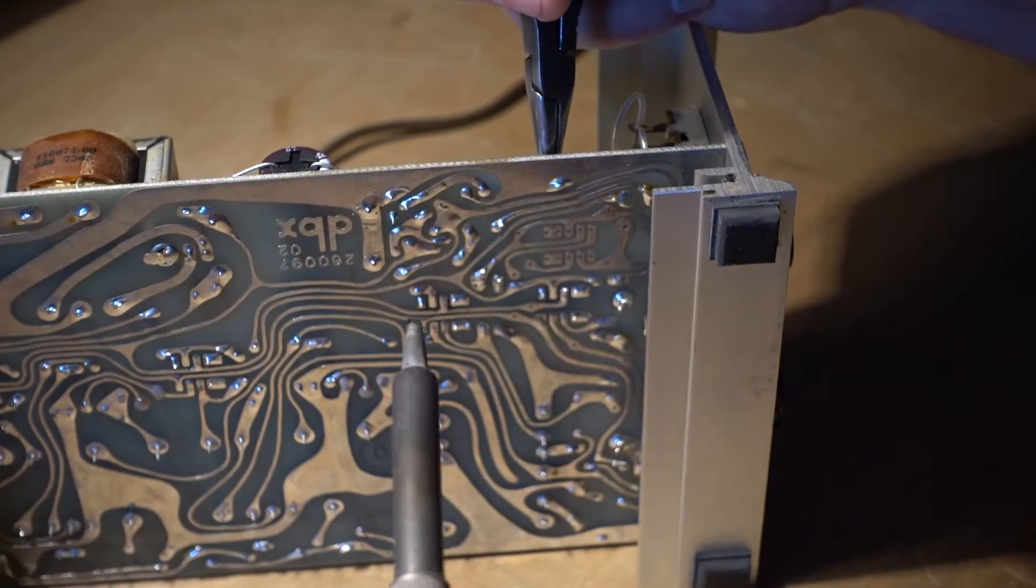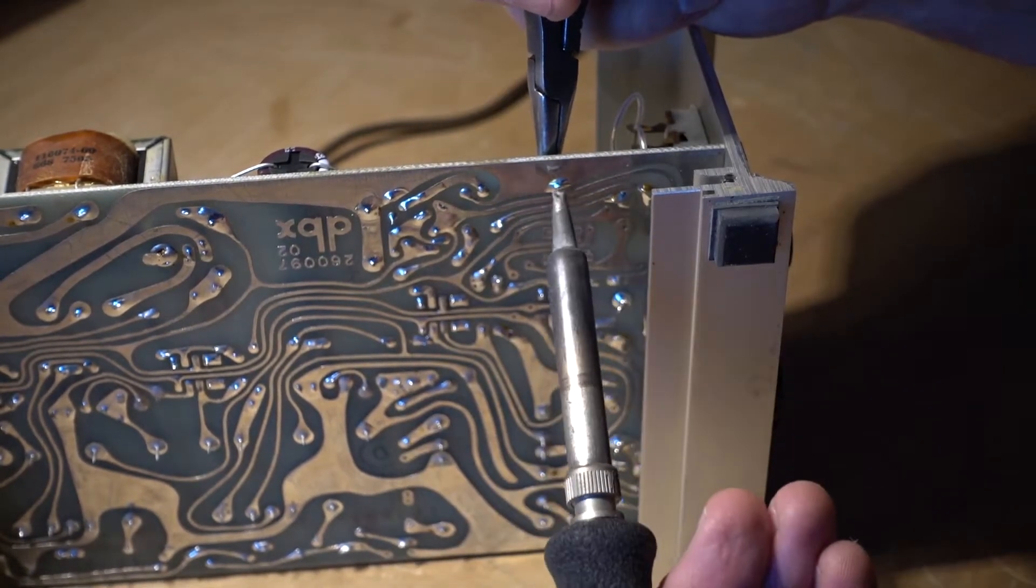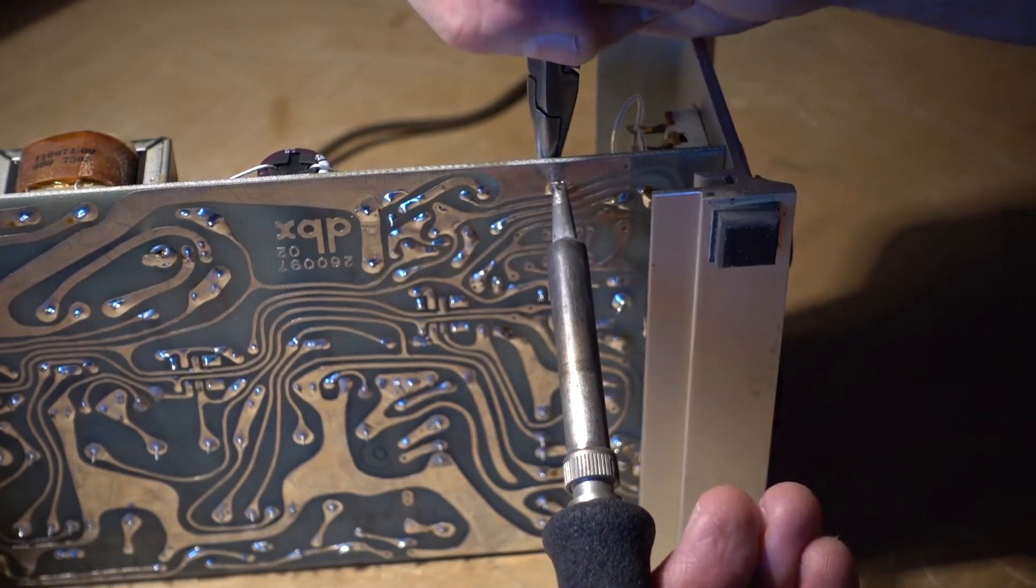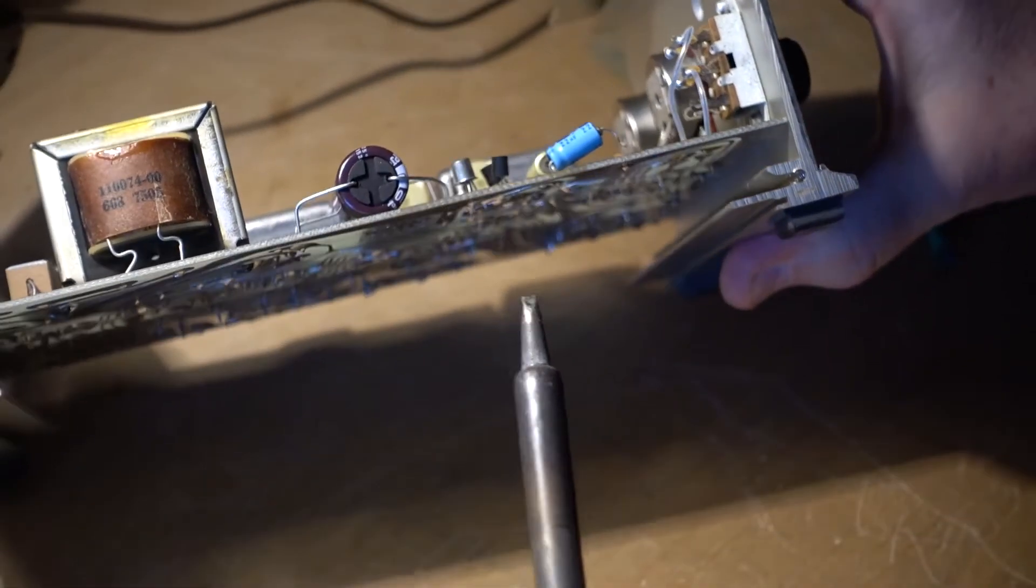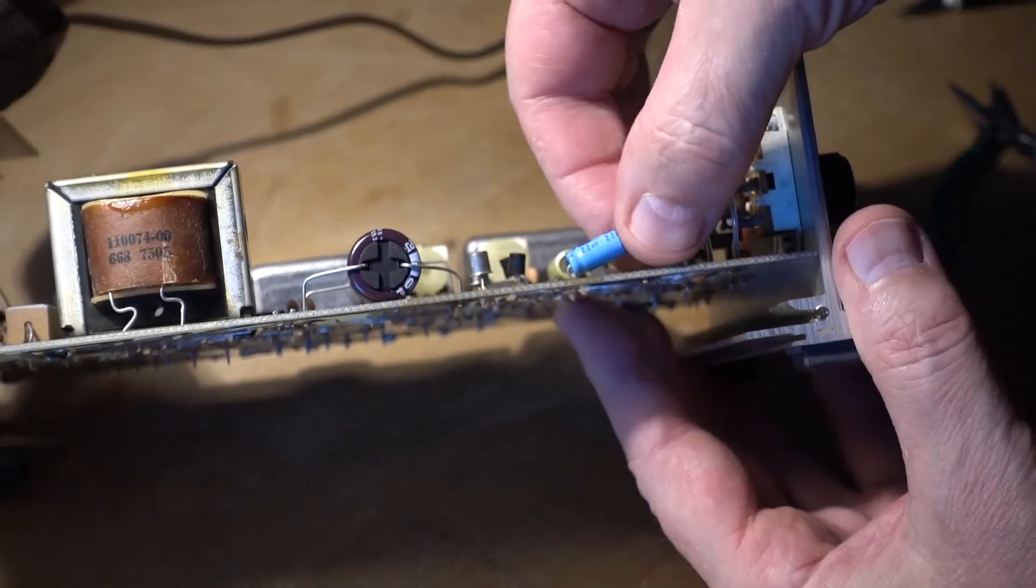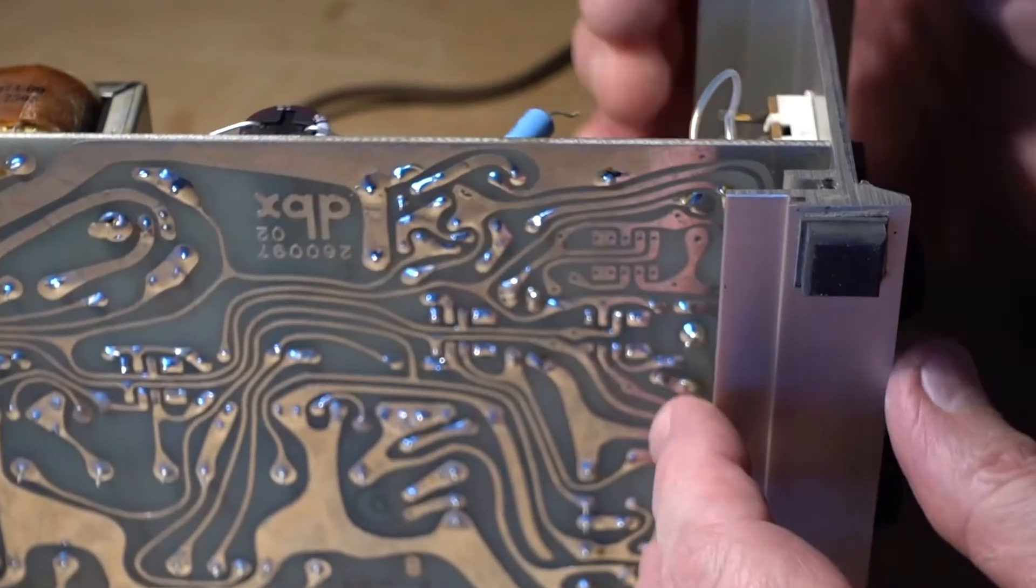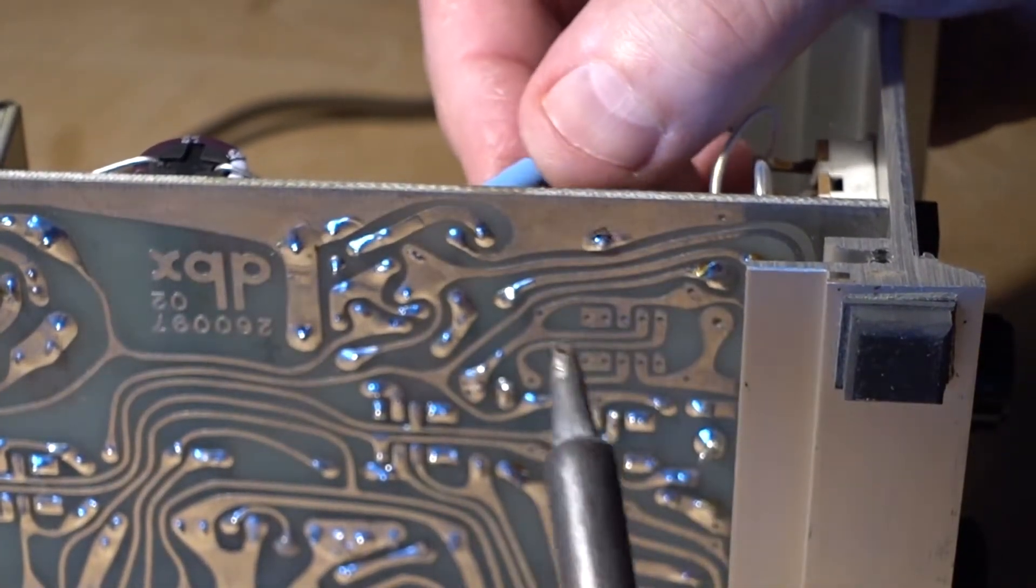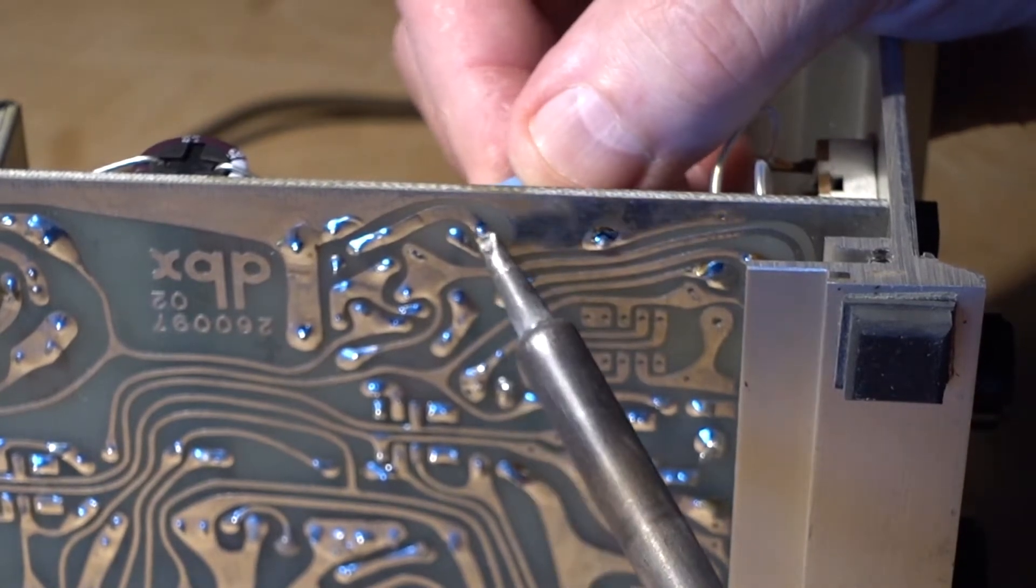I grab it with the pliers and heat up the joint with the iron, pull out one end, then I grab the capacitor by its body. This way, it's easier to get it out. On most of the old stuff, the leads are bent, so you have to wiggle it a little bit just to get it out.